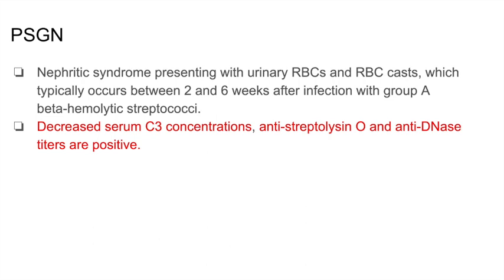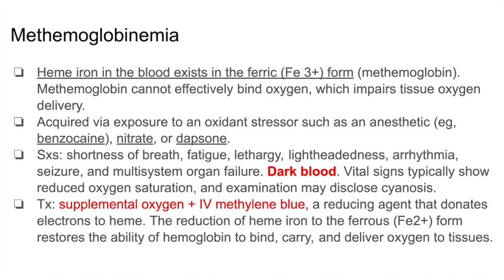This slide has a lot of information, but don't be overwhelmed — let's go through it together. Typically, you want iron to be in the ferrous form. Think of 'the two of us' for heme and oxygen — you just want them together so we can get the oxygen we need. However, if the heme iron in the blood exists in the ferric or Fe3+ form, this is methemoglobin. This is very high yield.